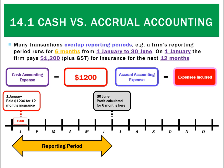Under accrual accounting though, we're going to be a little more thorough and look at what's actually been incurred. Incurred means used up. So if we look at that insurance payment, yes it's $1,200 but it's only $100 for each month. By the end of June we've only used up six months worth of insurance at $100 a month, so we'd say the expense is only $600.